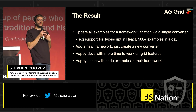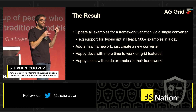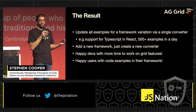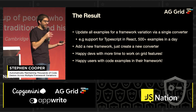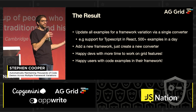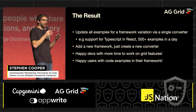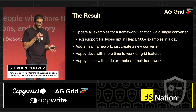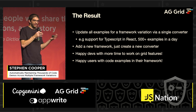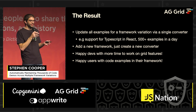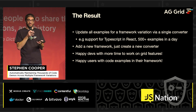The result is that we can update all our framework examples in one place. For example, we added support for React with TypeScript and it only took a day — but there were 500 examples. If we want to add a new framework, we just add one converter. We're happy developers because we're not maintaining all of these examples, leaving more time to work on features.